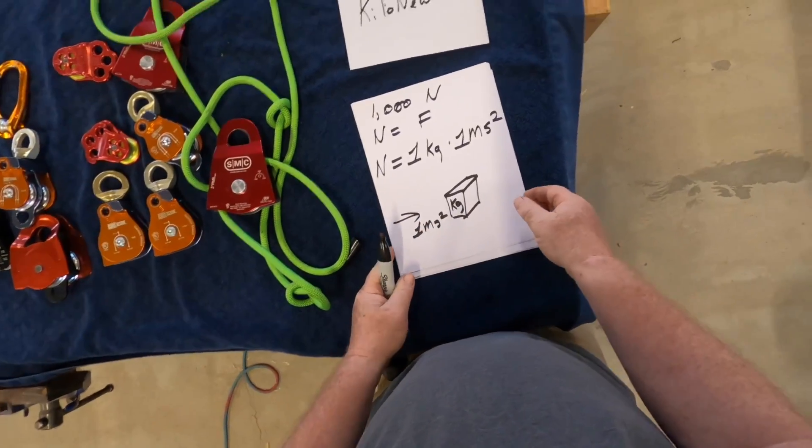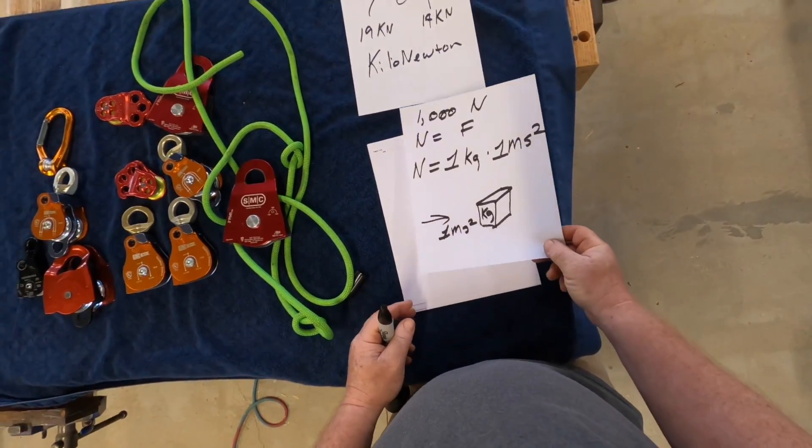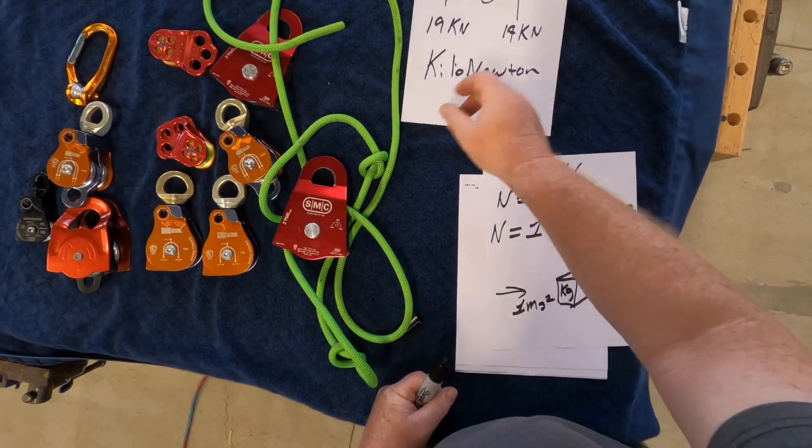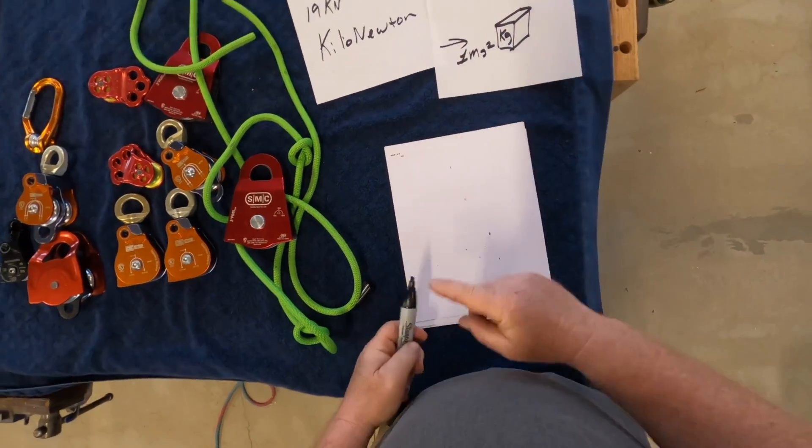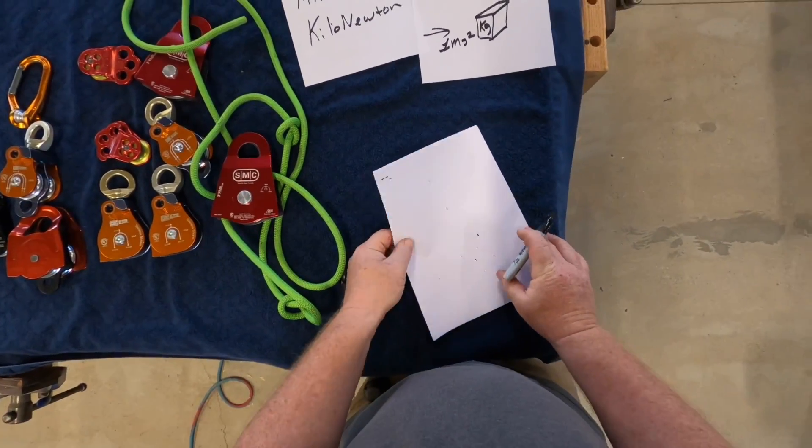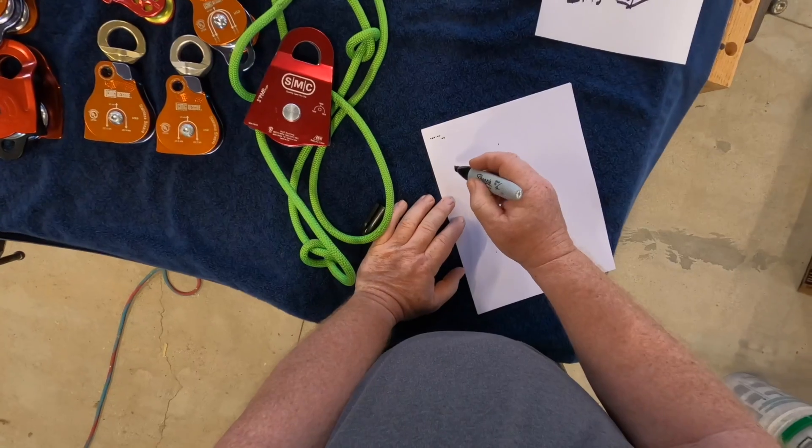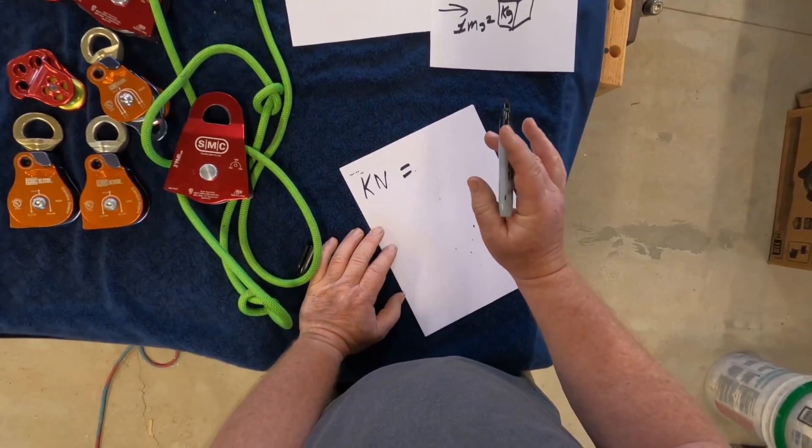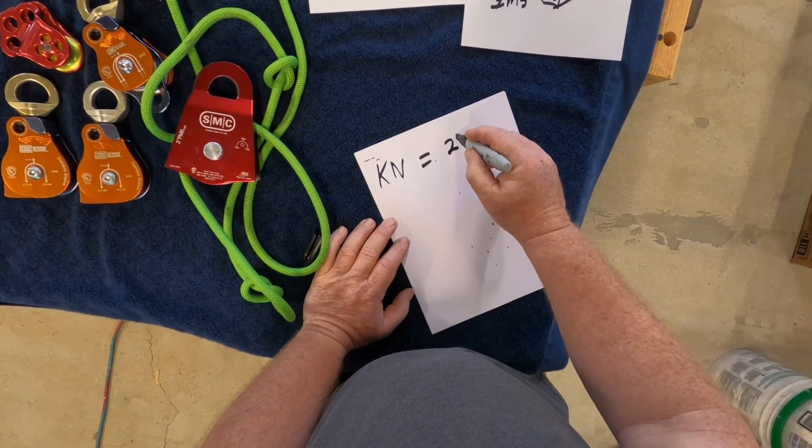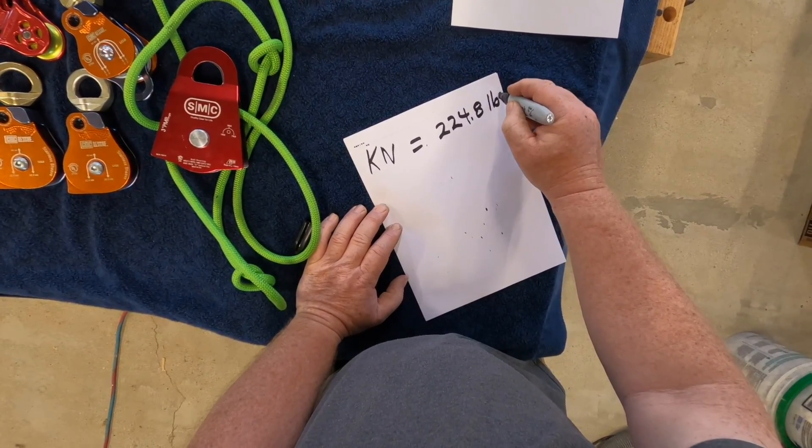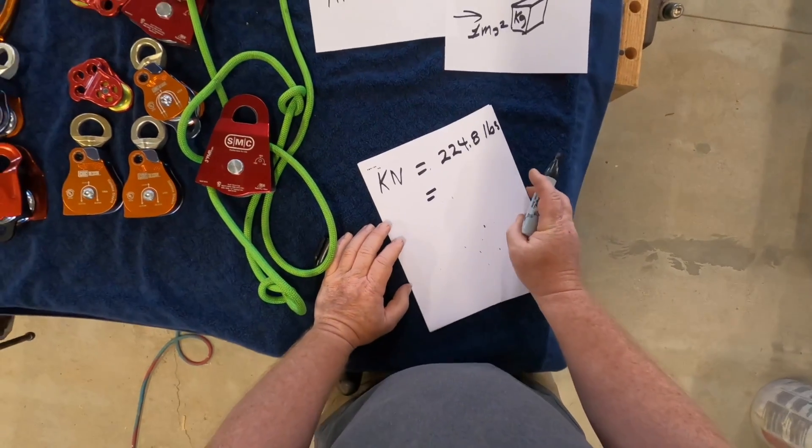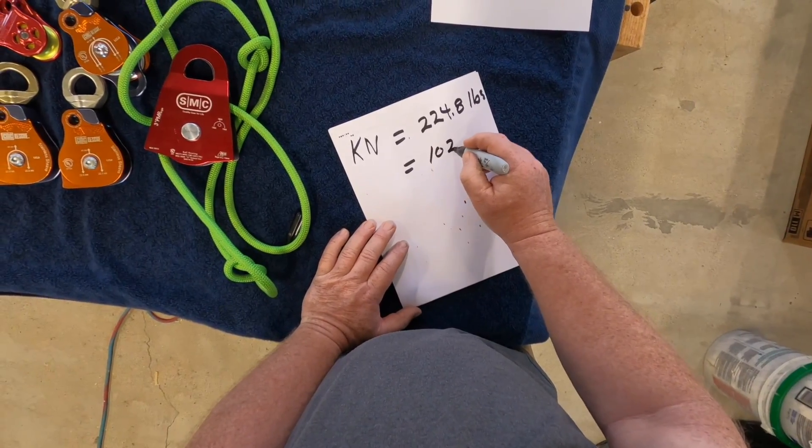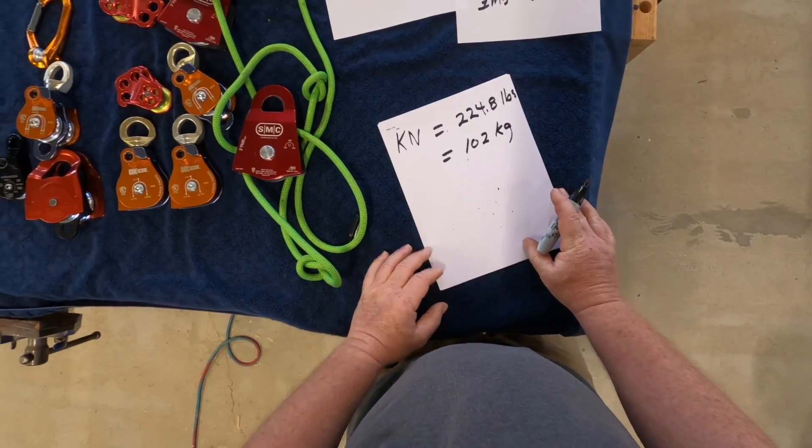So most of you are like, well how do I apply this? Why do I need to know this? And how do I apply it? So we're going to do a couple cheat codes here for most people. If you want to convert this to some easy math, all you have to do is, so one kilonewton is equal to roughly, now this isn't precise, 224.8 pounds, or if you're not from the United States and you use the metric system, it's going to be roughly 102 kilograms.